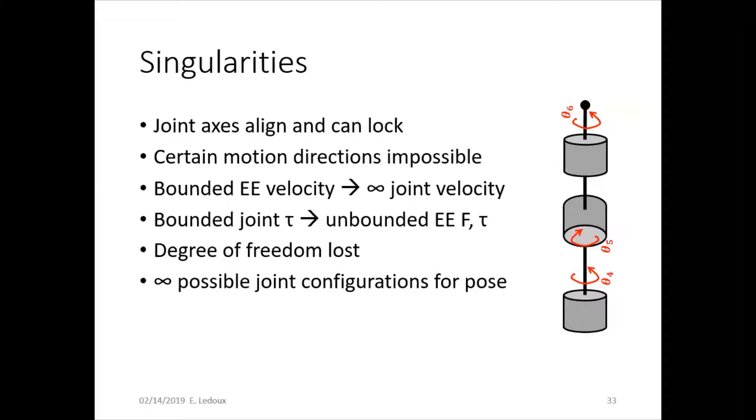A bounded end effector velocity goes to infinity joint velocities at a singularity, and a bounded joint torque goes to unbounded end effector forces and torque. A degree of freedom is lost, and there are infinity possible joint configurations for that specific pose of the tip.